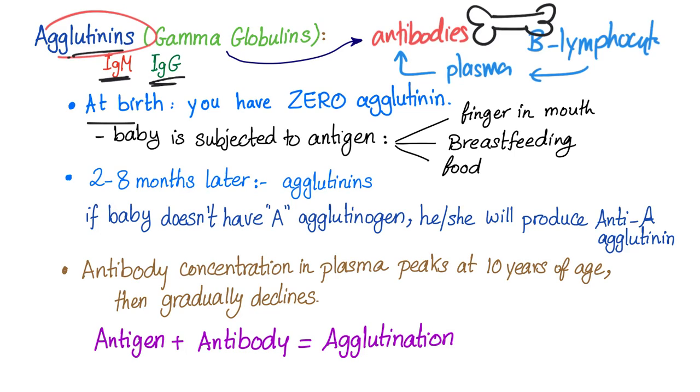These antibodies could be either IgM or IgG antibodies. When the baby is born, just immediately after birth, you have zero antibodies. Then the baby is subjected to antigen. Why? The baby puts his finger in his mouth. Breastfeeding. The breast and nipple, no matter how clean mommy is, they have bacteria. The baby eats food, they have bacteria.